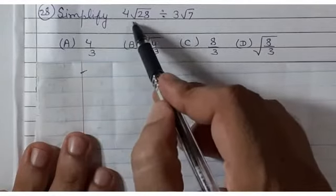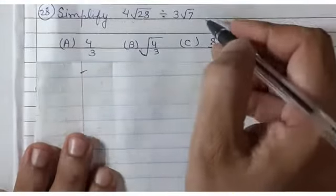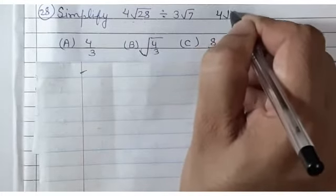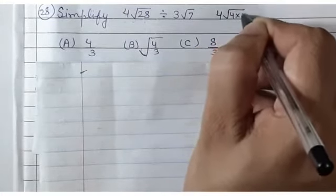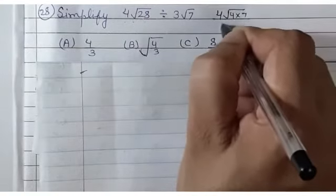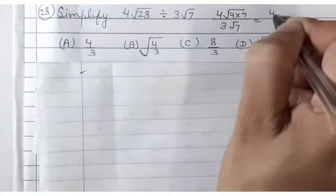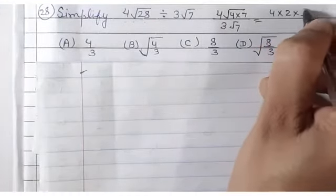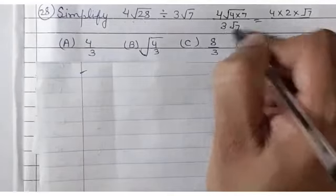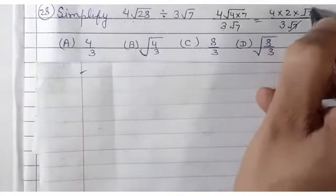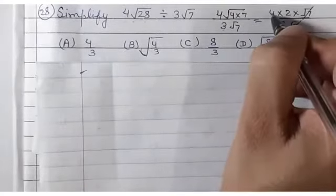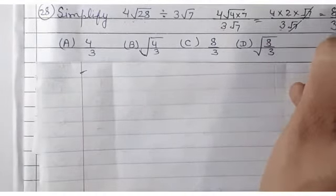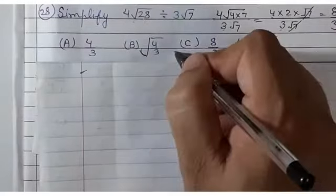Question 28: simplify 4√28 ÷ 3√7. Write √28 as √(4×7) = 2√7. So 4 × 2√7 ÷ 3√7 = 8√7 ÷ 3√7. The √7 cancels, leaving 8/3. That is your correct answer.